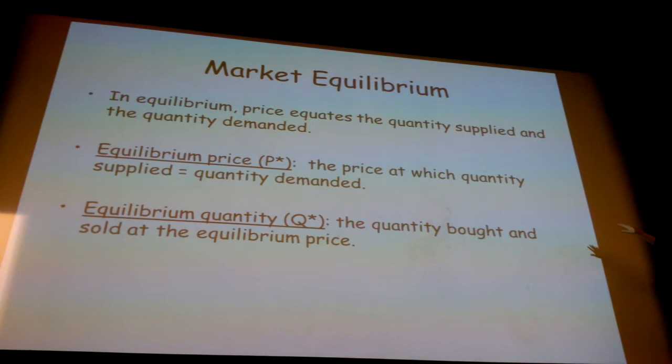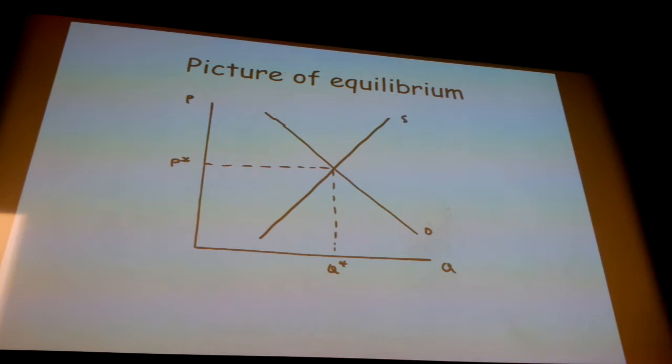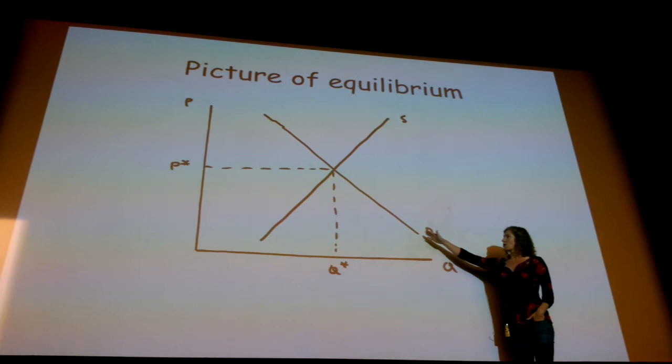This is best understood, I think, by just looking at a picture. So we've got our demand curve, we've got our supply curve, there's a price. At the price of P star, the quantity that consumers demand is exactly equal to the quantity that producers or firms supply. And so P star here is going to be our equilibrium price, and Q star here is going to be our equilibrium quantity.